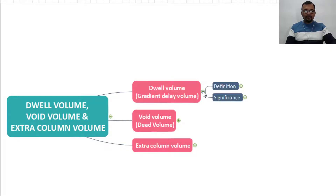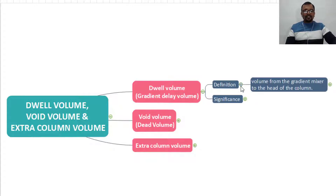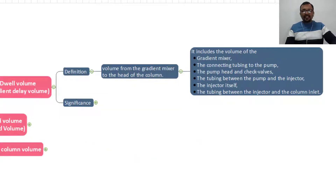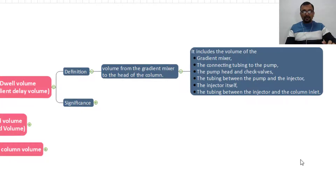Let us begin with dwell volume. The dwell volume is the volume from the gradient mixer to the head of the column. It includes the volume of the gradient mixer, the connecting tubing to the pump, the pump head and check valves, the tubing between the pump and injector, the injector itself, and the tubing between the injector and the column inlet.